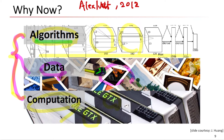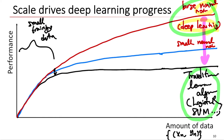Why now? There are three kinds of reasons: the first is the algorithm, the second is the data, and the third is computational power such as the GPU. Comparing to conventional learning algorithms like logistic regression, linear regression, or SVM, large-scale deep neural networks can benefit from a large amount of data and achieve very high performance gains.